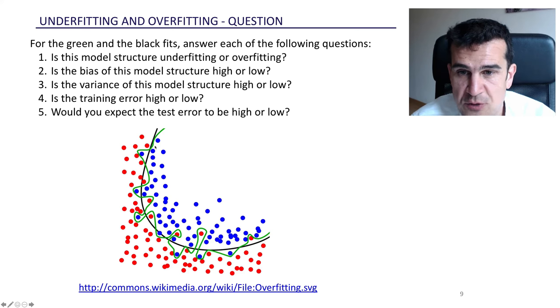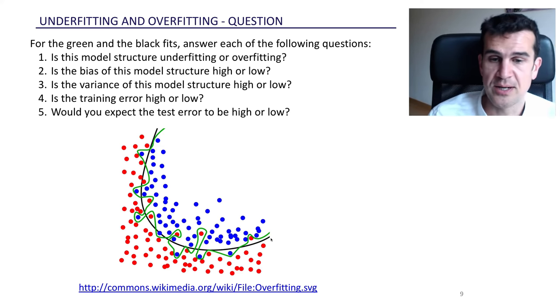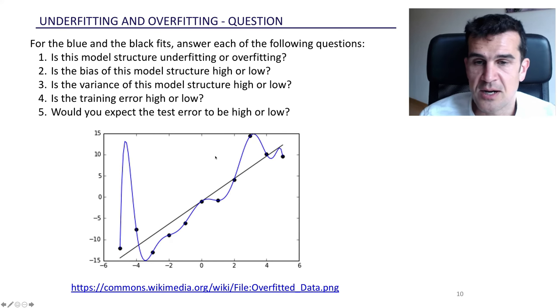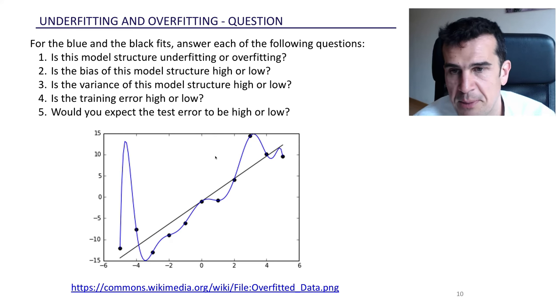On the other hand, the black line looks about right, I would say, and certainly it looks better than the green line. It's a less flexible model. Its bias would be slightly higher, but its variance would be lower and all in all, it looks like the test error, the error we would make on new predictions, which is what we're interested in, would be lower in this case.